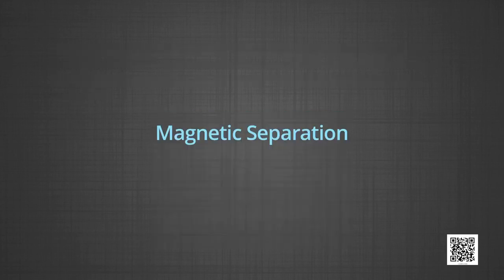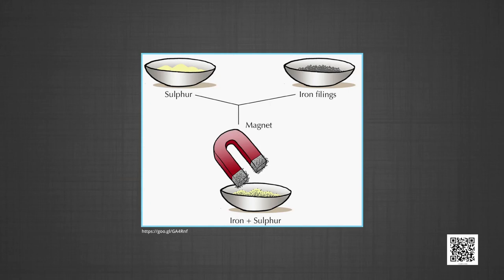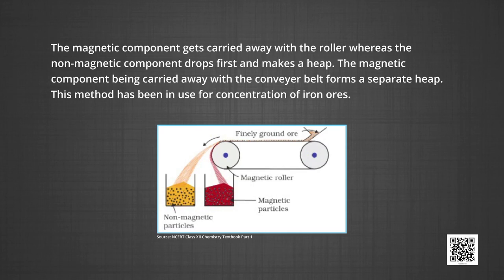Another simple method is magnetic separation. This method uses the difference in magnetic properties of ore components. If either the ore or the gangue is capable of being attracted by a magnetic field, then such separations are carried out. The ground ore is carried over a large conveyor belt which passes over a large electromagnetic roller. The magnetic component gets carried away with the roller, whereas the non-magnetic component drops first and makes a heap. The magnetic component being carried away forms a separate heap. This method has been in use for concentration of iron ores.